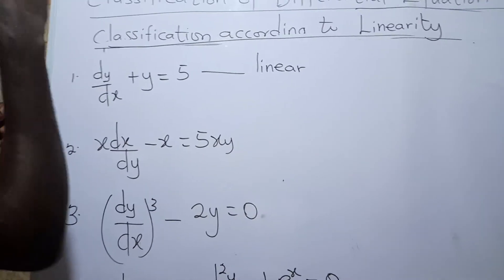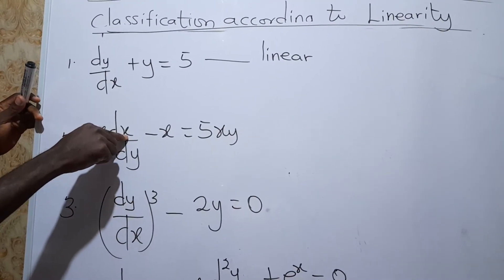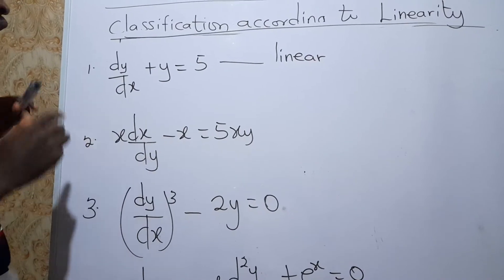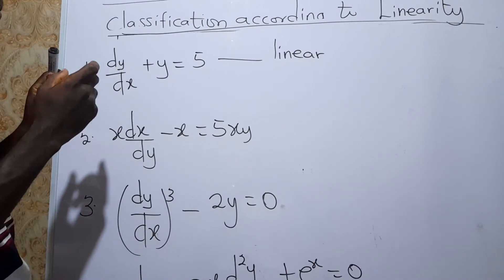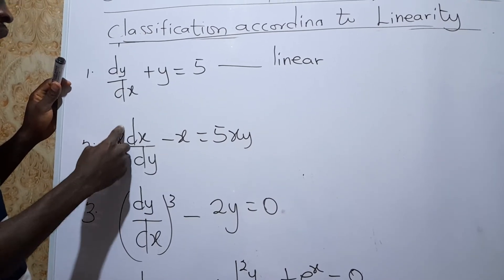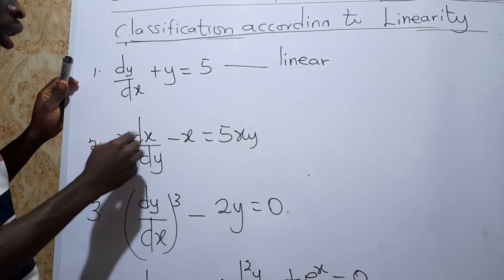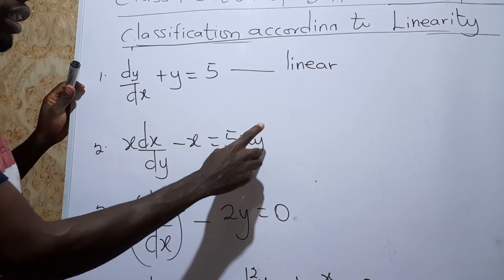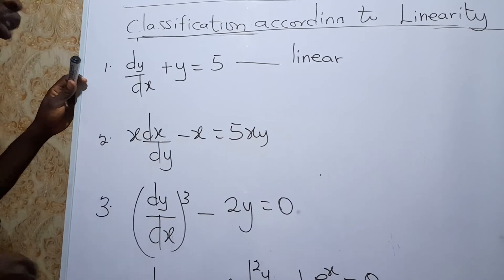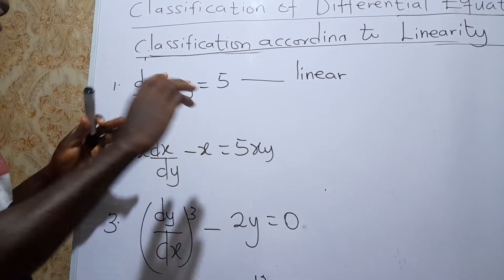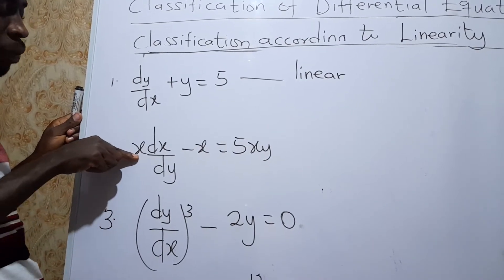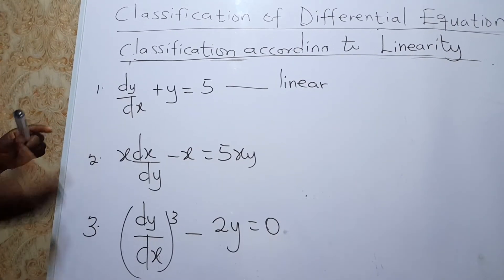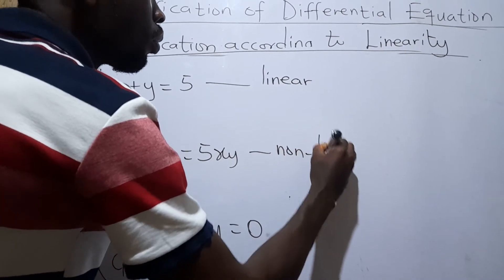For the second equation, the dependent variable is x and the independent variable is y — be careful here. The dependent variable x has degree 1, and derivatives have degree 1, so condition one is satisfied. However, checking condition two: there is a product between a dependent variable and a derivative. That alone disqualifies this differential equation from being linear. So we say this is non-linear.